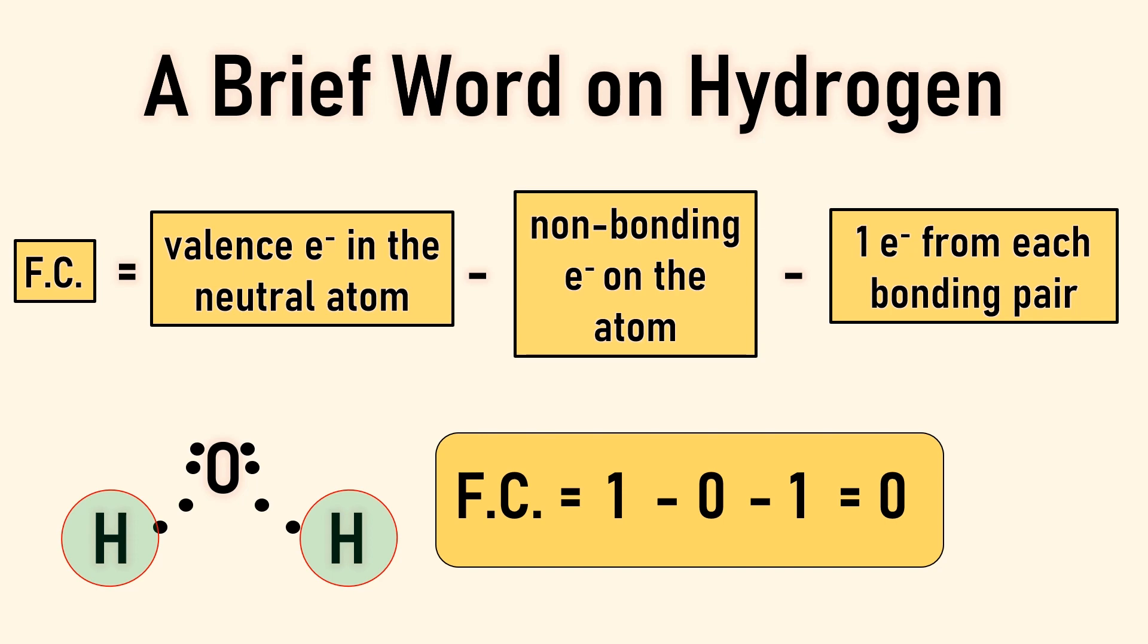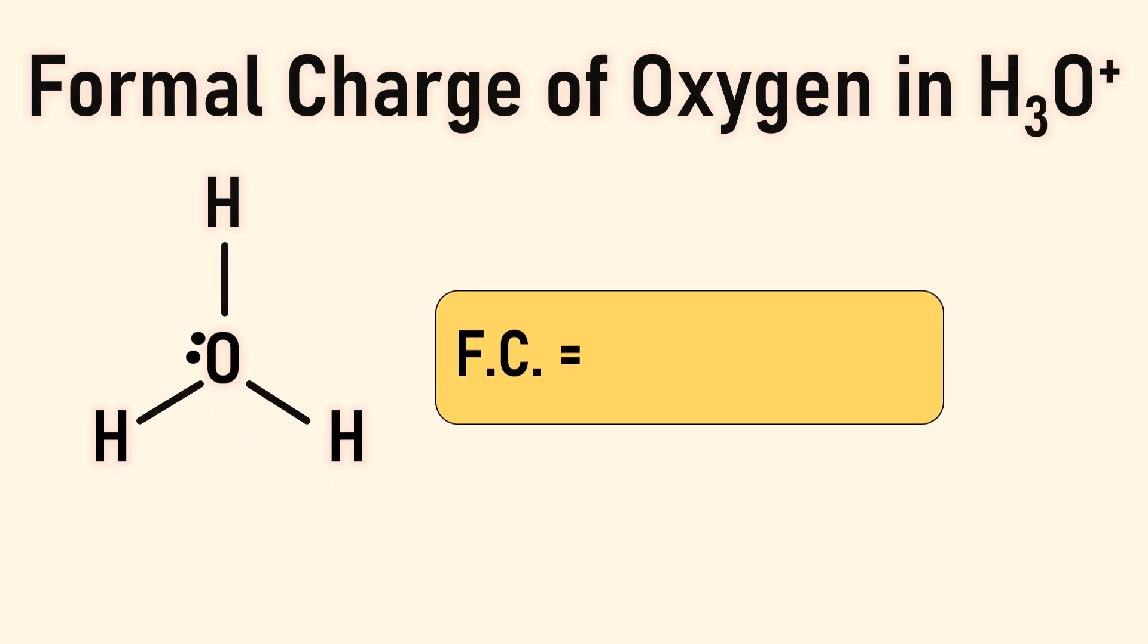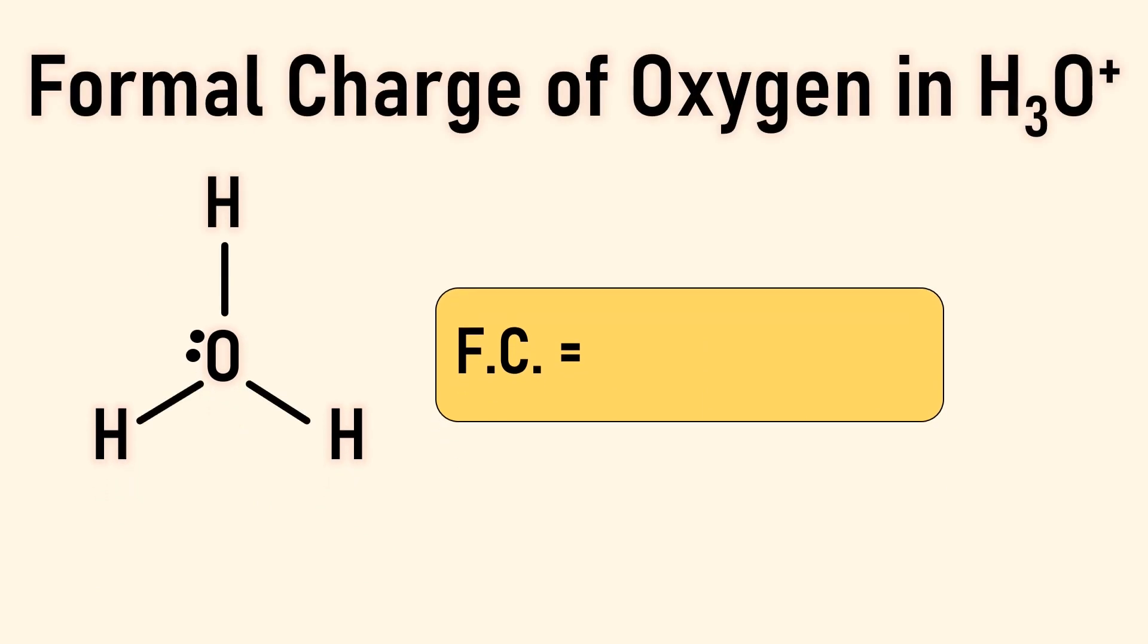Now let's look at oxygen in the hydronium ion. Again, neutral oxygen has six valence electrons. I'll subtract two for the two non-bonding electrons, then subtract three, which represents one electron for each of the three bonds, and the formal charge is plus one. We'll add a positive symbol inside of a circle near the atom with the formal charge.